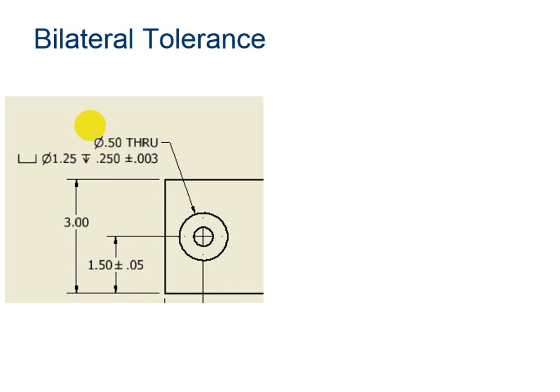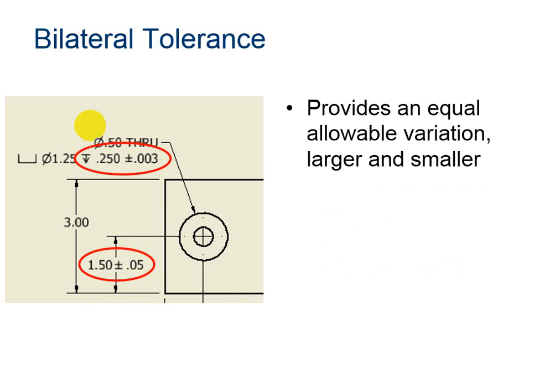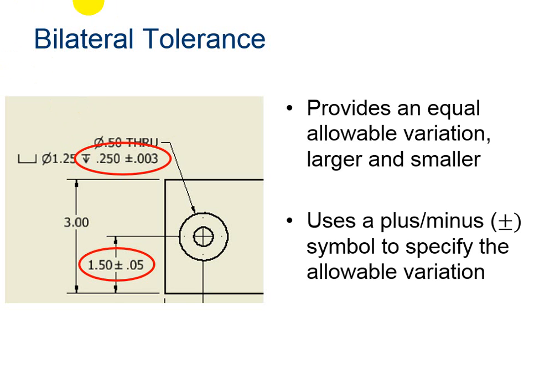Bilateral tolerance. Here's an example of a bilateral tolerance. It provides an equal allowable variation both larger and smaller than the specified dimension. You will know that it's a bilateral tolerance because you will see a plus minus combination symbol given next to the tolerance amount. This example shows that the counter bore depth can be .003 larger or smaller than .25, and the hole location can be .05 larger or smaller than 1.5.